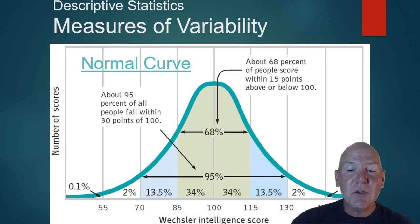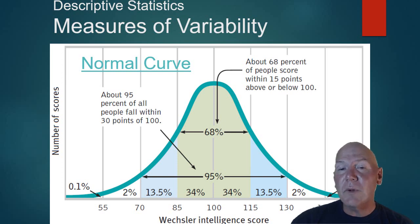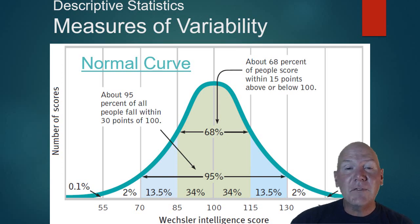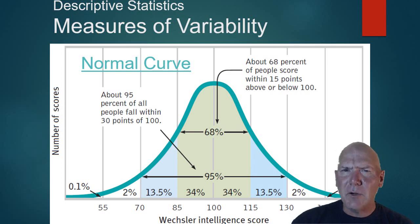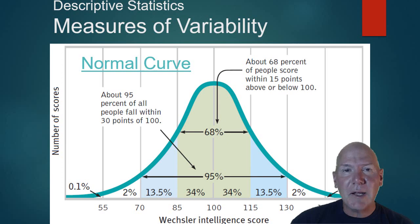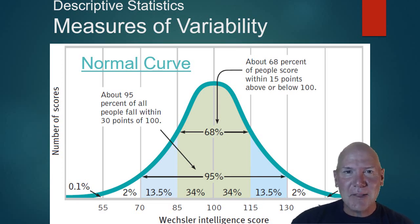Interestingly, on the Wechsler Intelligence test, a score of 85 to 115 is considered normal. Between 115 and 130 is superior. Between 85 and 70 is inferior. Above 130, you're in the top 2% — gifted territory. And if you're below 70, you might have intellectual dysfunctioning. We'll look more closely at that during the testing unit.